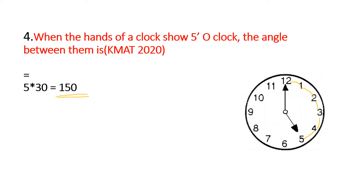So we get 150. The first angle of the clock is this, because the clock is circular — it is a circular rotation. The gap between each number on the clock is 30 degrees. These are five different divisions: 12 to 1, 1 to 2, 2 to 3, 3 to 4, 4 to 5.